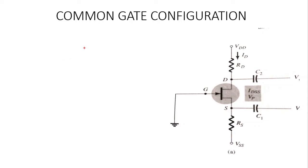In the previous video we studied the voltage divider bias configuration. In this video we are going to study the common gate configuration. In the common gate configuration, the gate is common between drain and source, the input signal is applied to the source terminal, and the output signal is taken from the drain terminal.